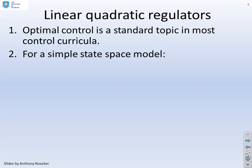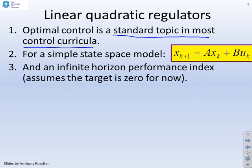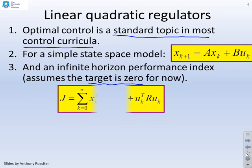Linear quadratic regulators. Optimal control is a standard topic in most control curricula. If I take a simple state-space model, x_{k+1} equals Ax_k plus Bu_k, and I use an infinite horizon performance index, where for simplicity I'm going to assume that the target is zero. There's my performance index, the sum from k equals 0 to infinity, x_{k+1} transpose Qx_{k+1} plus u_k transpose Ru_k.